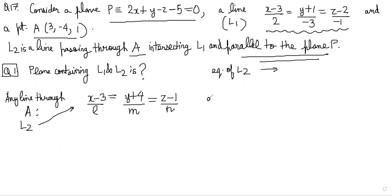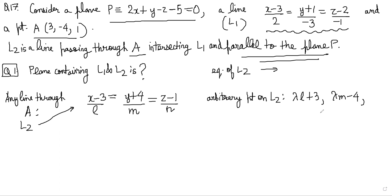An arbitrary point on L2 will basically be (λL + 3, λM − 4, λN + 1). I've set the parameter equal to λ and found a random point on line L2.